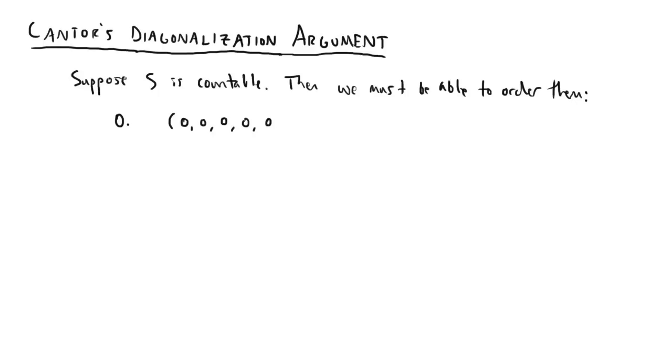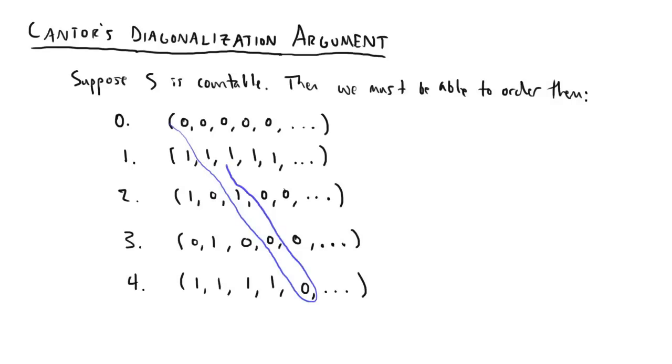Keep in mind that each of these sequences is infinite. The dot dot dot after the first few numbers doesn't mean that it repeats, so anything could follow. Now that we have some ordering, consider the sequence formed by the diagonal, and notice that it's also an element of S.